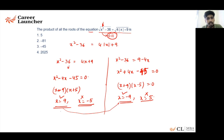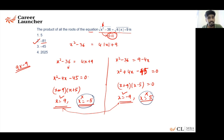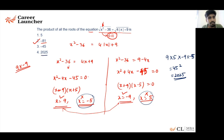The only two valid values of x are 9 and -9. The question asks for the product of the roots, which is 9 × (-9) = -81. Note that if you mistakenly include x = 5 and x = -5, you'd get 9 × 5 × (-9) × (-5) = 2025, which is also present in the options — but that's incorrect because 5 and -5 violate the domain of the square root function.